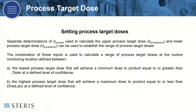Setting the process target dose involves separate determinations of process variation — sigma process — used to calculate the upper and lower process target dose and establish the range of process target doses. The combination of these inputs is used to calculate a range of process doses at the routine monitoring location. The lowest process target dose will achieve a minimum dose equal to or greater than the sterilization dose at the defined level of confidence — K equals 2, as most processes are set at 95% confidence. The highest process target dose achieves a maximum dose to product equal to or less than the maximum dose at the defined level of confidence. Basically, you're looking at minimum dose plus a certain percentage and maximum dose minus a certain percentage, and that becomes your target dose.